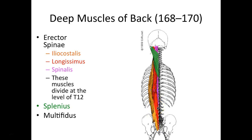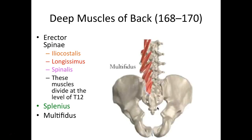We also have splenius, which assists us in extending the neck. And we have the multifidus muscle, a very deep muscle most developed in the lumbar area, which assists us in rotating or twisting the spine — like that dance from the 50s called the twist. If you don't know it, look up some videos on YouTube.